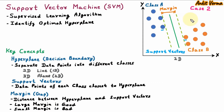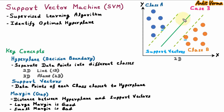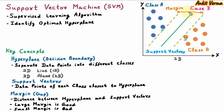Now we are checking case 3. In case 3, we have another hyperplane. With the help of support vectors, the dotted lines are created. And the distance between support vectors and hyperplane is the margin. Here we can see that the margin is very large. As compared to case 1 and 2, case 3 is having the largest margin. So this is the good margin and this is the optimal hyperplane. SVM identifies the optimal hyperplane, meaning which has the maximum margin, so that it can easily separate class A and class B.